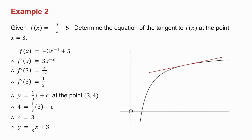I start off in exactly the same way by finding the derivative. But before I do that, I just need to sort out the minus 3 over x. Then I take the derivative. I want it at the point x equals 3. So in place of x goes 3, and I get that the derivative at x equals 3 is a third. So I substitute x equals 3 into f of x to find the y value, and I get the point 3, 4.